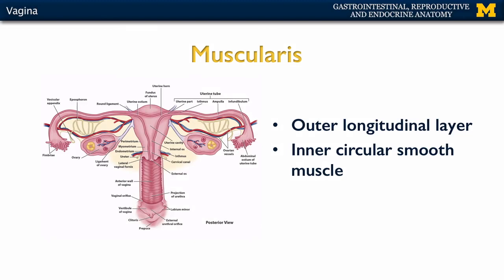There is a fairly distinct layer of circular smooth muscle as well as an outer longitudinal layer of muscles associated with the vagina. This gives a very distinct rugose appearance to the muscular layer of the vagina.